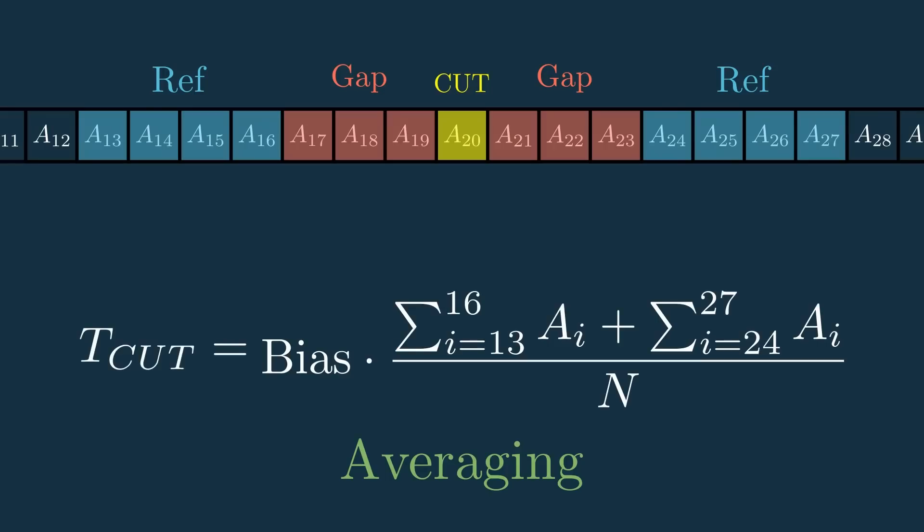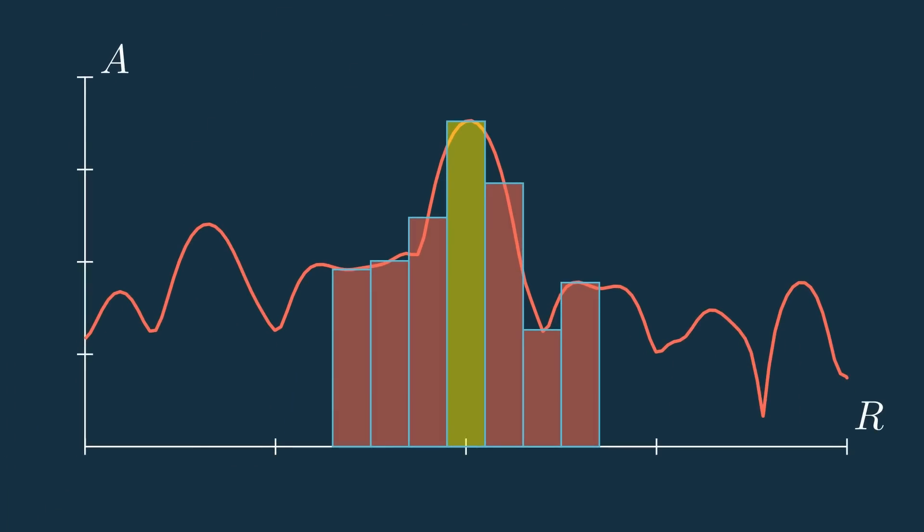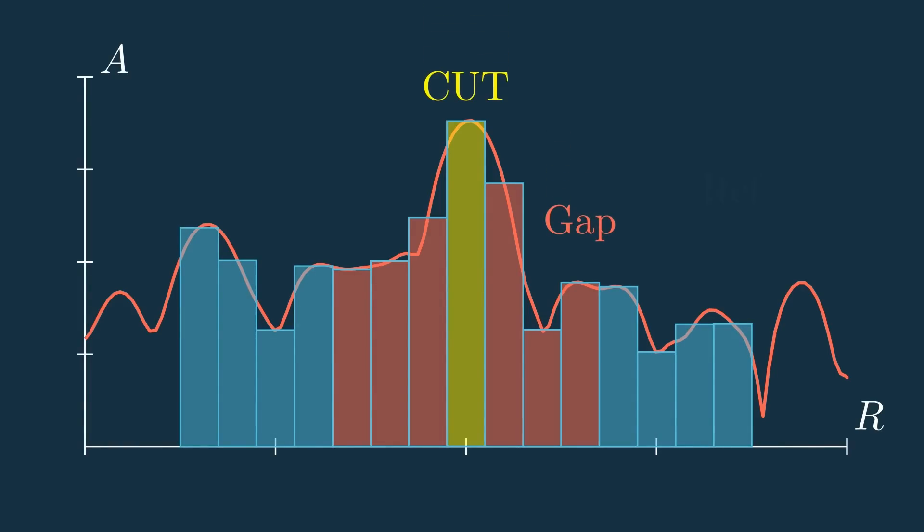And there you have your cell under test's personalized threshold. But before we repeat this over all the cells, let's go back to the plot to show what this really looks like. Again, we have the cell under test, the gap cells, and now the reference cells. We can take these reference cells and average their amplitudes, then take that average and multiply it by the bias.